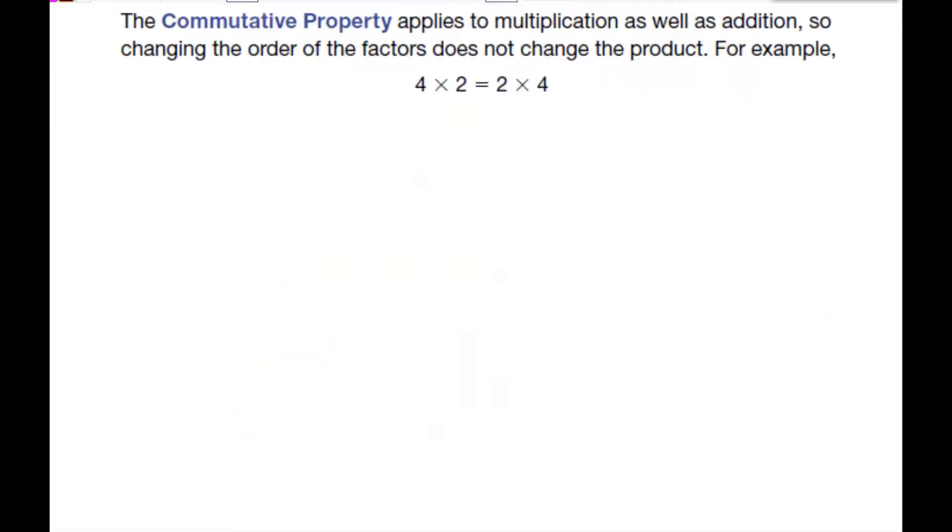We have a property here called the commutative property. This property tells us that it does not matter what order I multiply my numbers or add them. Because four times two is eight and two times four equals eight. It's the same as two plus four is the same as four plus two. This property only works for multiplication and addition. It does not work for division or subtraction.